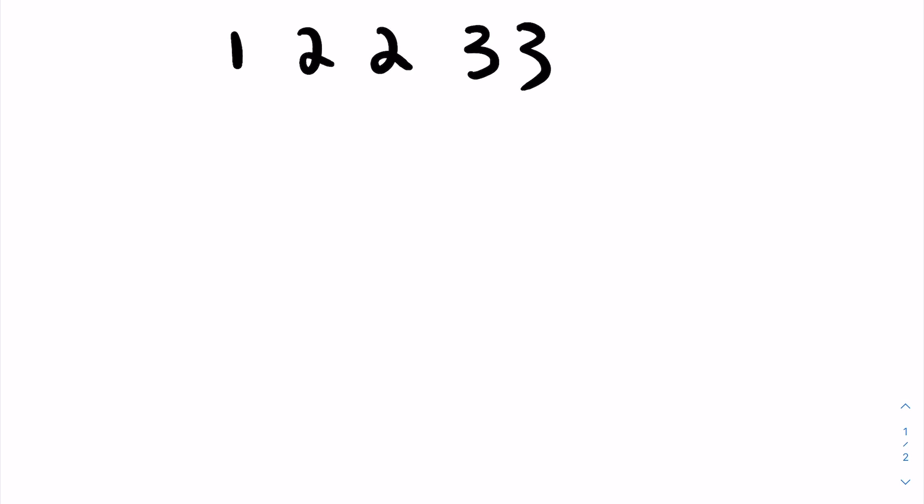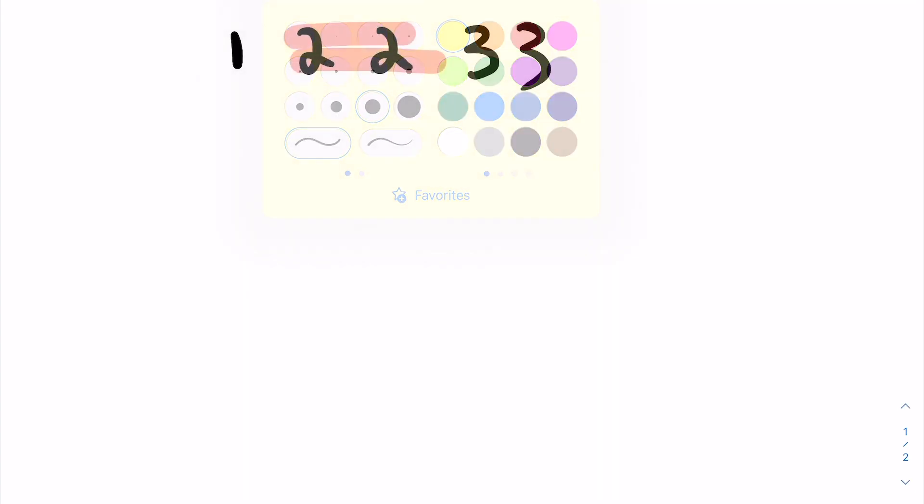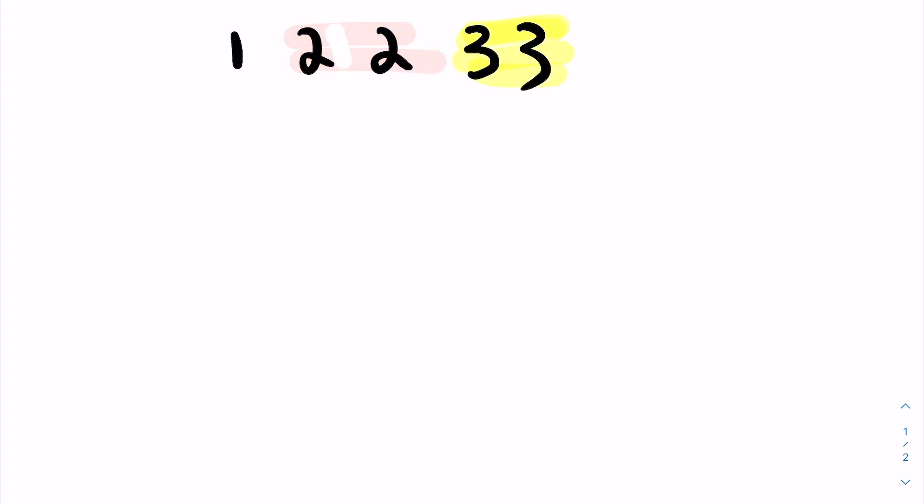In our first sample test case, we have five balls of the colors 1, 2, 2, 3, and 3. In this test case, we can either remove the two 2s, or the two 3s, or both. Those are the only two pairs of balls that are the same color. Here we can clearly see the maximum occurs when we remove both pairs, so we get an answer of 4 in this test case.